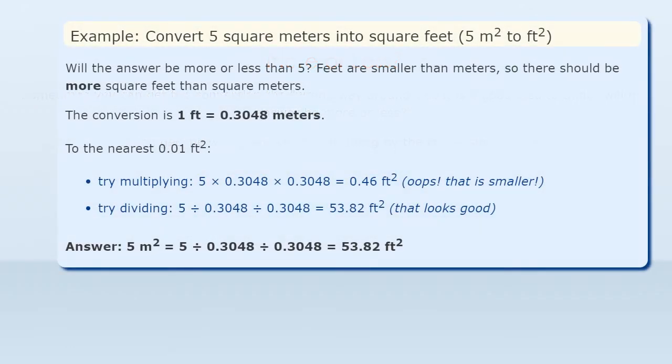Example: convert 5 square meters into square feet. Will the answer be more or less than 5? Feet are smaller than meters, so there should be more square feet than square meters. The conversion is 1 foot equals 0.3048 meters.